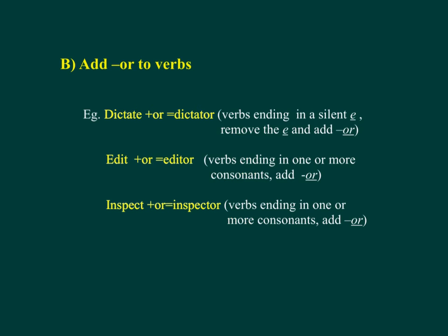B. Add OR to verbs. For example: Dictate + OR = Dictator. Verbs ending in a silent E — remove the E and add OR. Edit + OR = Editor. Verbs ending in one or more consonants — add OR.